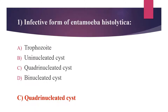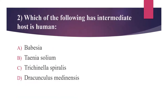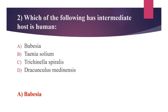Second question: Which of the following has the intermediate host as human? Option A: Babesia. Option B: Taenia solium. Option C: Trichinella spiralis. Option D: Dracunculus medinensis. The answer is Option A, Babesia. In Babesia, the human is the intermediate host and the tick is the definitive host. In Taenia solium, the intermediate host is pig. Trichinella spiralis also has pig as the intermediate host. For Dracunculus medinensis, Cyclops is the intermediate host.